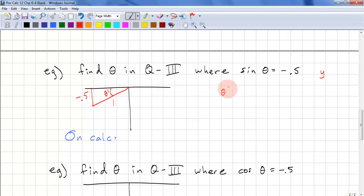So theta prime equals pi over 6. So theta equals pi plus pi over 6. So that's pi and then plus that little bit. And this is 7 pi over 6.